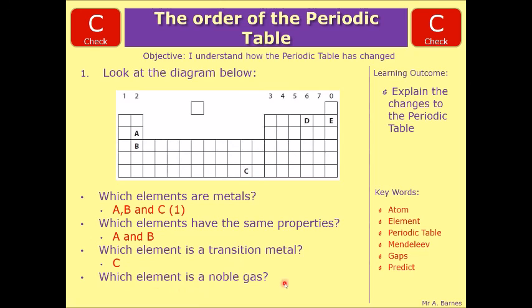And finally, which is a noble gas? So the other groups you need to know, alkaline metals, halogens, and then group zero is the noble gases. So it's E.